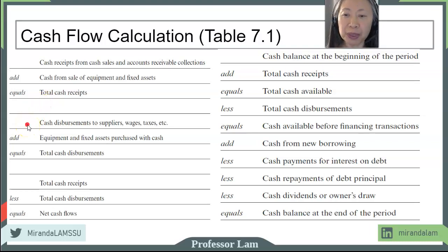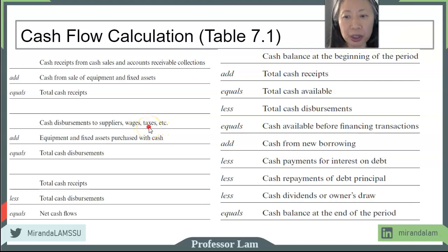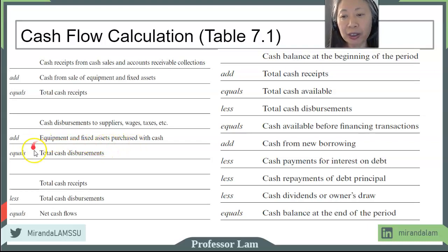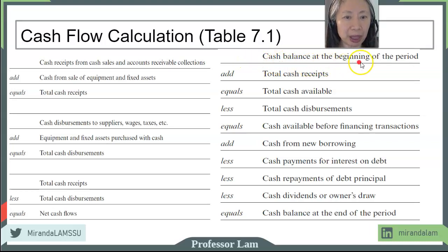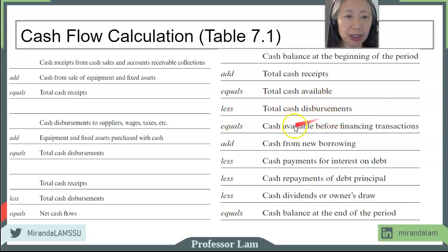Second are disbursements — cash outflow. This includes payment to suppliers, employees in the form of wages, government in the form of taxes, and so forth. This is day-to-day operation cash payments. In addition, if the company purchases any equipment or fixed assets using cash, that is another use of cash. Together that represents your cash disbursement. You take receipts minus disbursements to get net cash flows. To compute cash flow for the business, you take the balance at the beginning of the period, add cash received — that becomes total cash available — less your cash disbursement, which equals cash available before financing transactions.